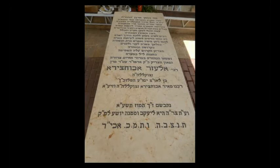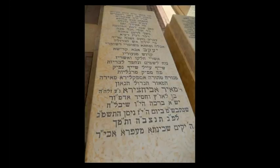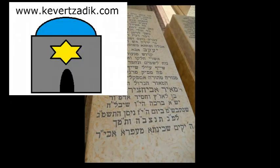Once you come in, on your left hand side will be the Kvarim of the Baba Elazar, Rabbi Elazar Abuchatzerah. And right across from him on your right is his father, the Baba Meir, Rabbi Meir Abuchatzerah. And so that's how you get to both of them. Hope you enjoyed this and we'll see you next time. Bye-bye.